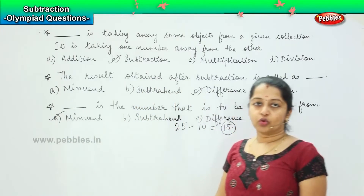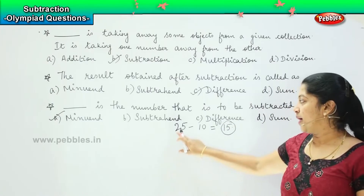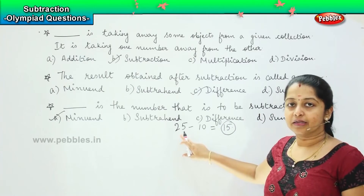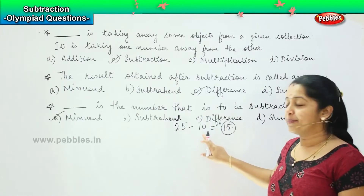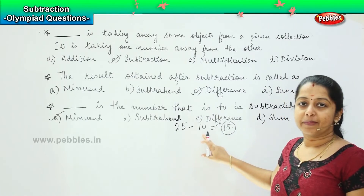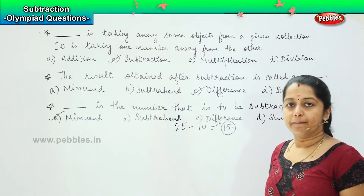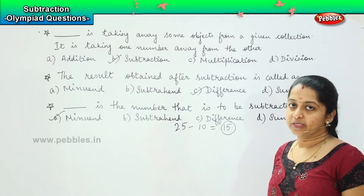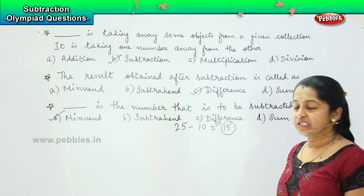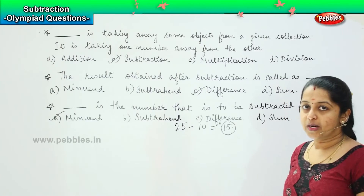So if you remember, the minuend is the greater number, and the subtrahend is the number that is lesser than the minuend.